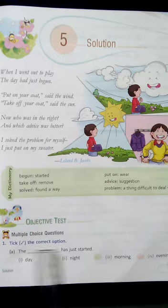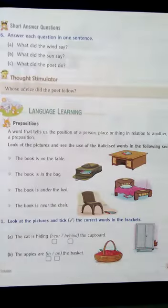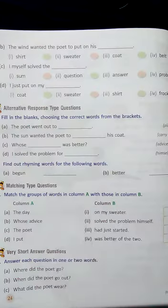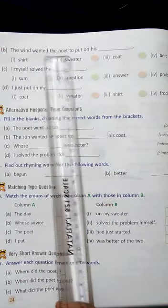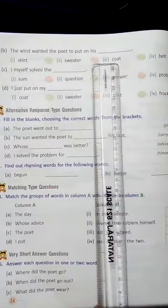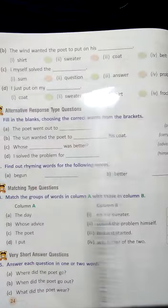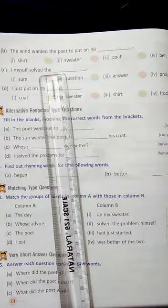have to write 'day' here and tick it. Next, 'The wind wanted the boy to put on his coat,' so you have to write 'coat' and tick the coat option. Next, 'I myself solved the'